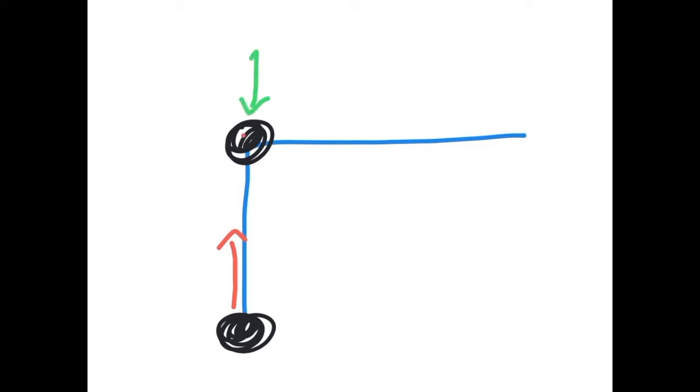To get it to stop moving forward, I can push it backwards. To get it to start moving sideways, I need to push it sideways. I can do both of these at the same time with a single hit if I do this.